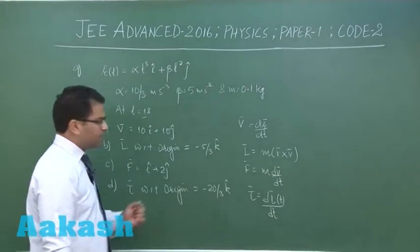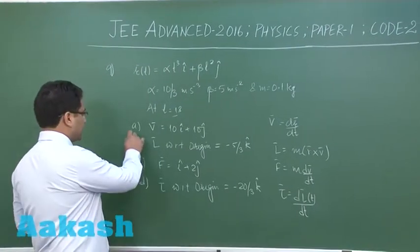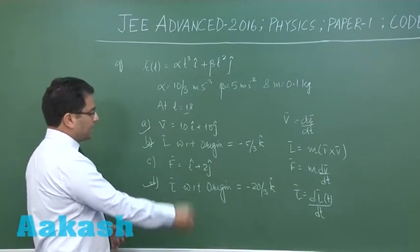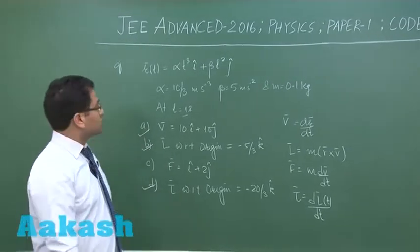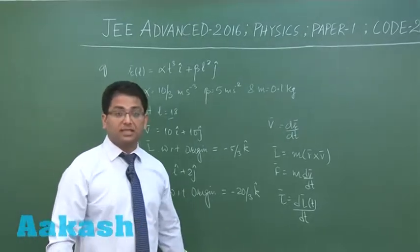So it is all simple calculation on very easy arithmetic. I have done it and the correct option would be a, b and d. So that is about question number 9, we will proceed to question number 10.